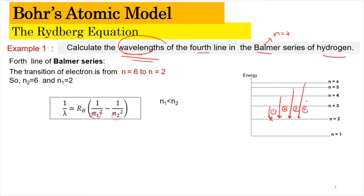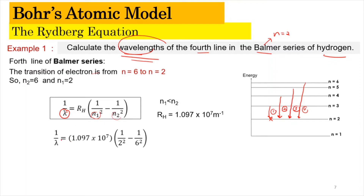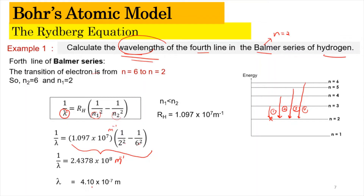Remember, for emission, N2 must be greater than N1. Since we're finding wavelength in meters, RH must be in per meter. Substituting: 1 over lambda equals 1.097 times 10 to the power of 7 per meter, times (1 over 2 squared minus 1 over 6 squared) — don't forget to square the values. Calculate this bracket first, then inverse to find lambda. The result is lambda equals 4.10 times 10 to the power of negative 7 meters.